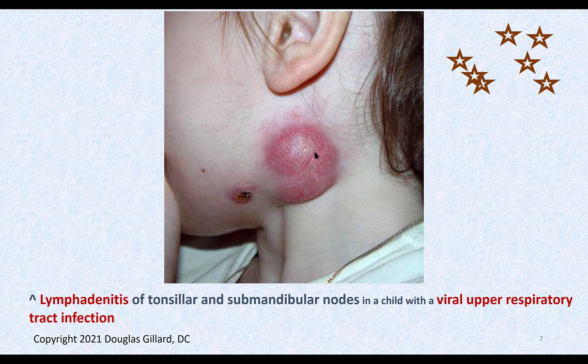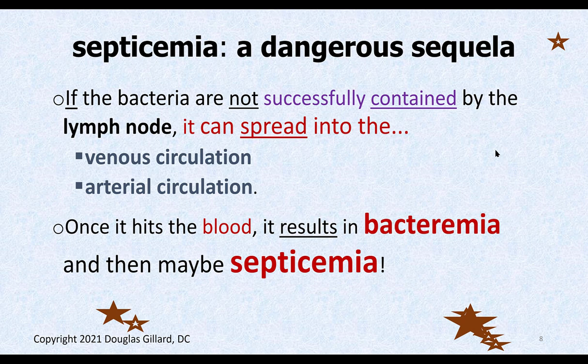Another example of lymphadenitis: here's the tonsillar lymph node blown right through by the bug. Does that mean her immune system isn't very powerful? It's possible — it should be checked after she recovers. Then if the bacteria keeps going through the lymph node and the lymph system, it can ultimately get into the bloodstream — a very dangerous situation called septicemia.